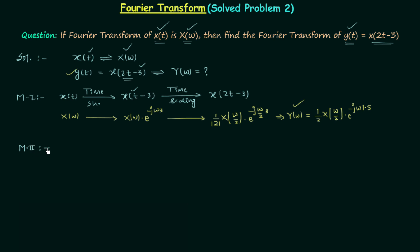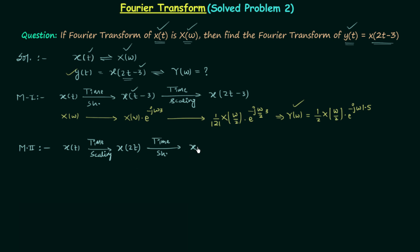In Method 2, we will perform the time scaling operation first and then the time shifting operation. Starting from scratch with signal x(t), we want x(2t - 3). We first perform time scaling by 2 to get x(2t). Now we perform the time shifting operation. Since every operation is with respect to the independent variable t, not 2t, we separate t and perform a shift by 1.5, so that when you expand the bracket you have x(2t - 3).